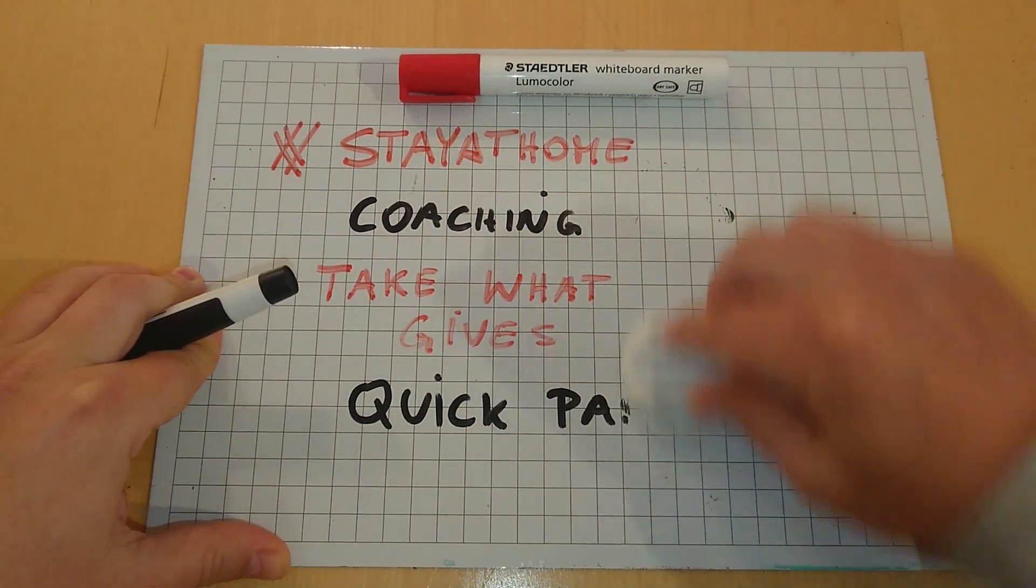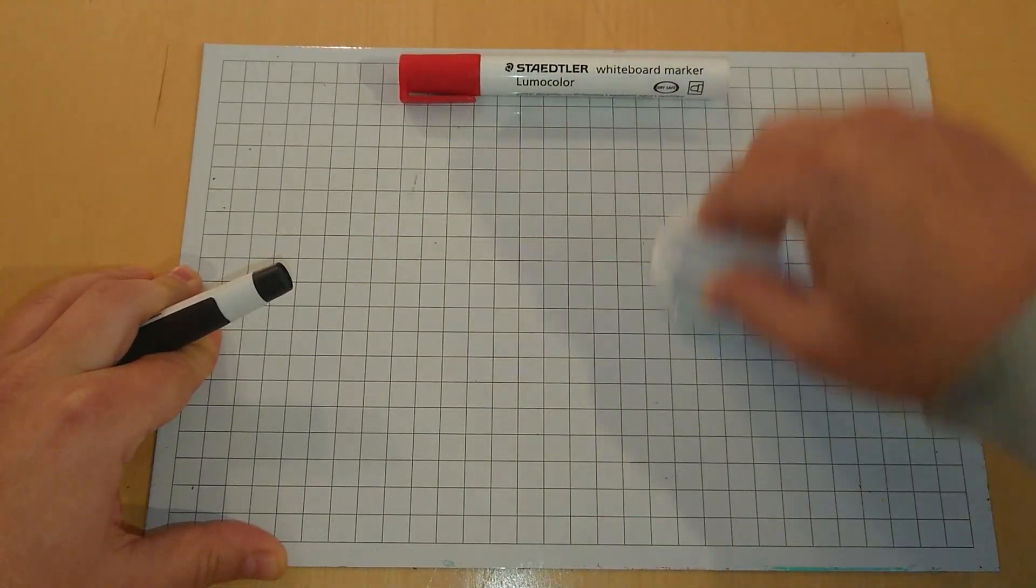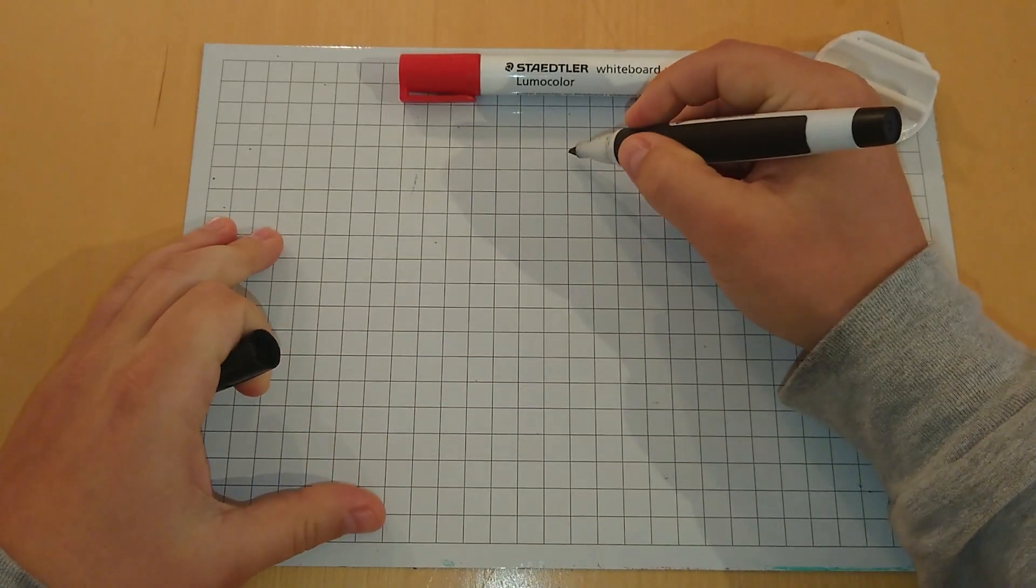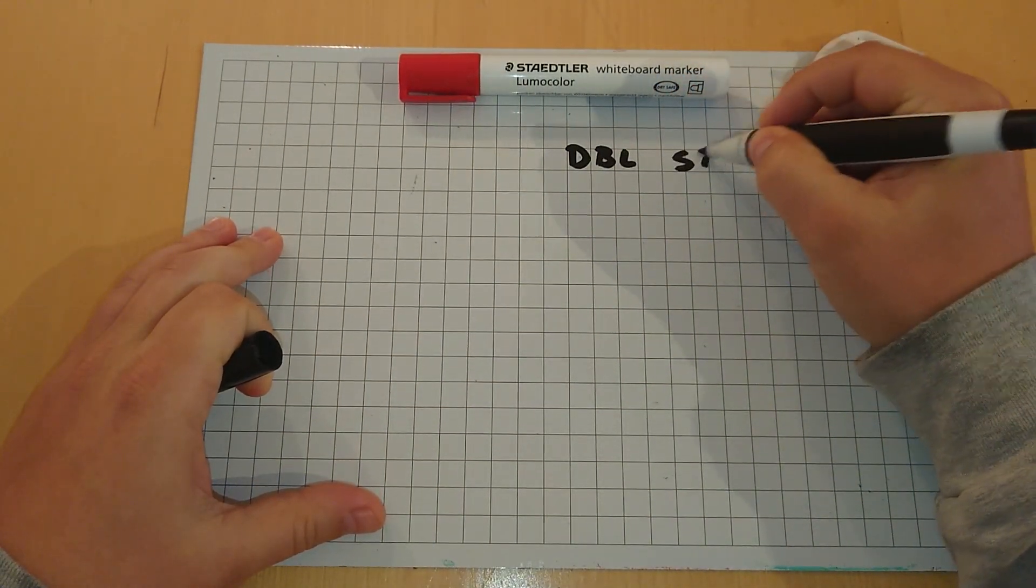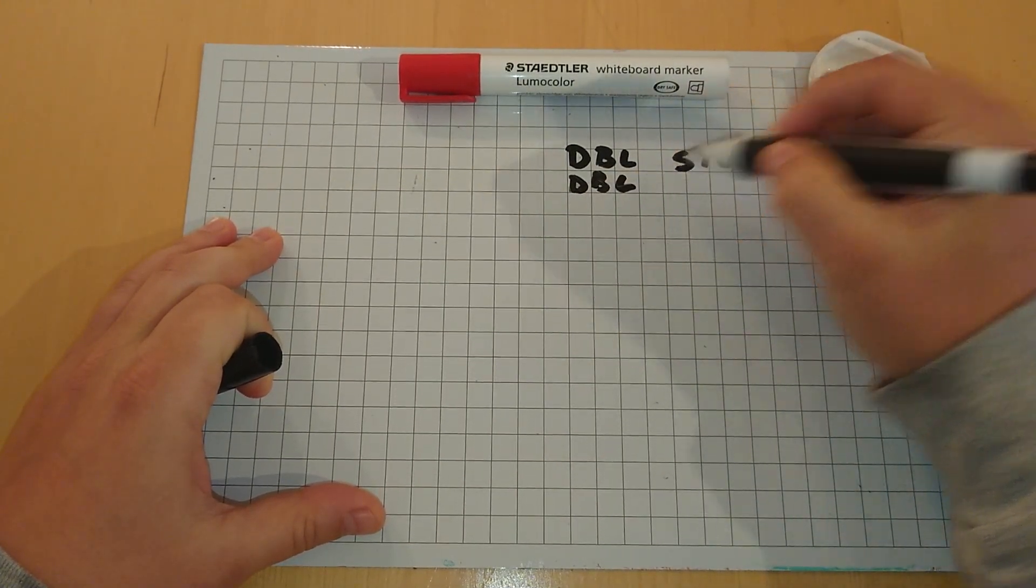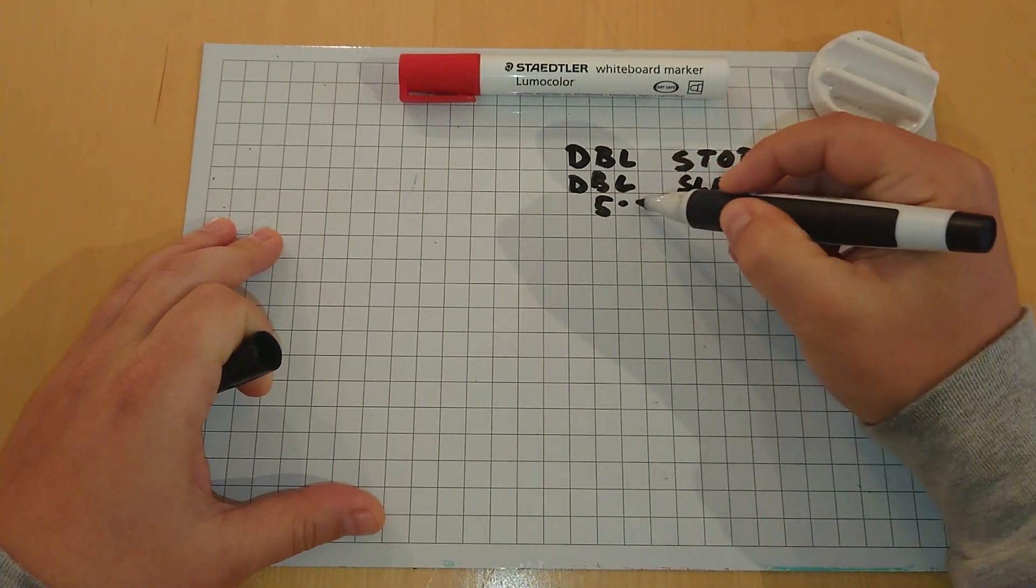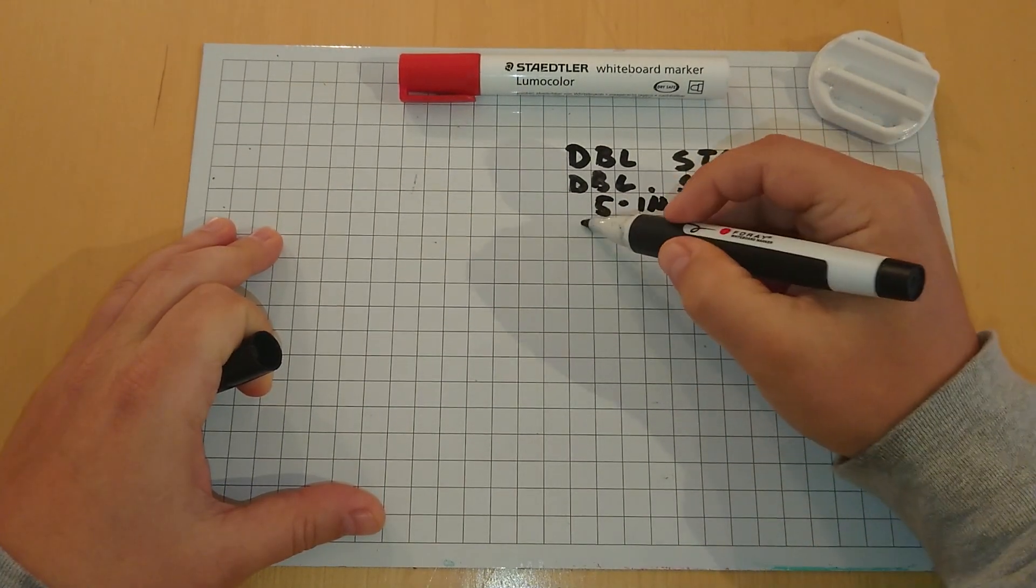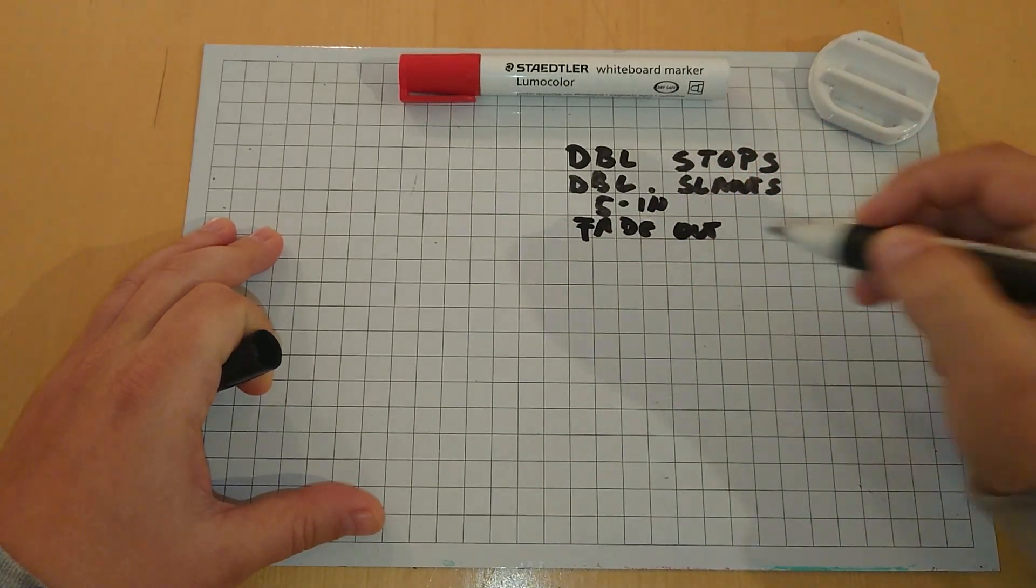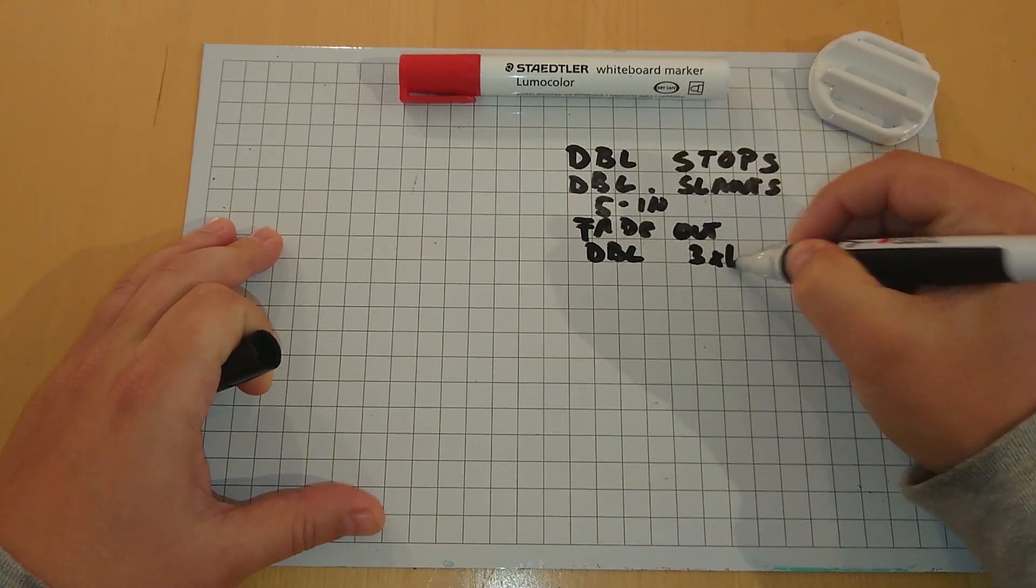What are we going to cover? We're gonna look at double stops, double slants, the five in concept, the fade out concept, and the double stick concept. This will be a three by one passing concept.